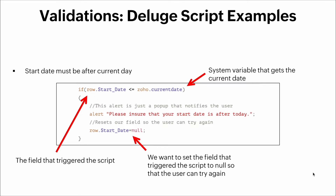The second conditional checks whether the start date field is less than or equal to the current date. If so, an alert tells the user to please ensure that the start date is after today, and then we set the value of the start date field to `null` so the user can try again.